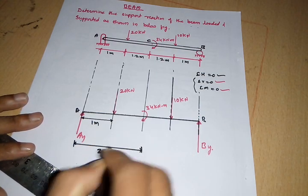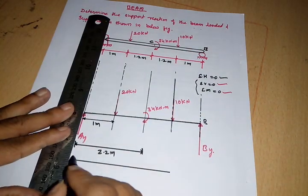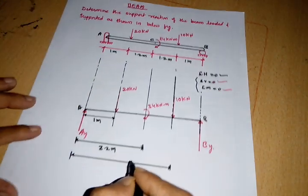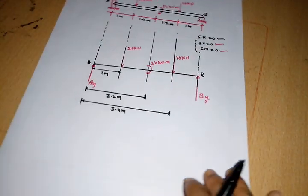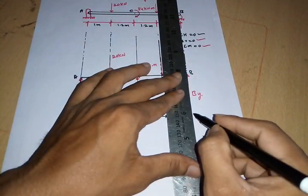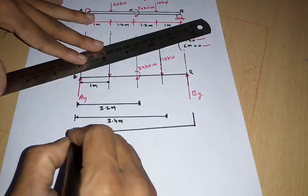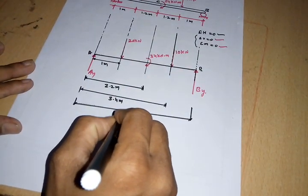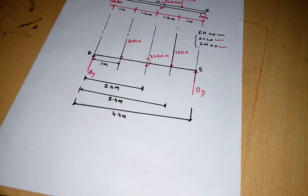From point A to the external moment it is 2.2 meters. From point A to the 10 kilonewton force it is 2.2 plus 1.2, which equals 3.4 meters. From point A to support B it is 3.4 plus 1.0, which equals 4.4 meters. These are the distances between point A and all the forces and reactions.